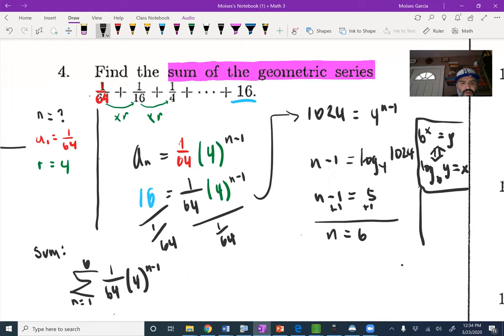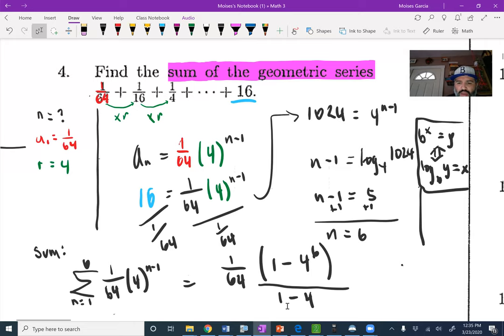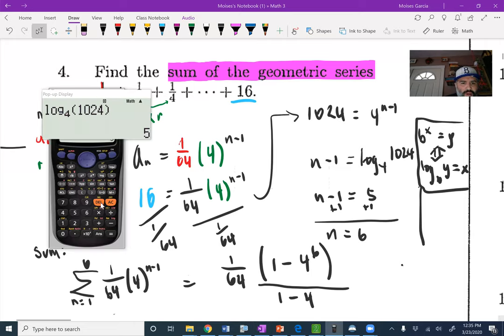And that's equal to 1 over 64, which is our first term, times 1 minus r, which is 4, to the nth power, which is 6, all over 1 minus r, which is 1 minus 4. I'm going to program it just the way I have it there: 1 over 64, 1 minus 4, times this fraction here, 1 minus 4 to the 6 power, all over 1 minus 4.